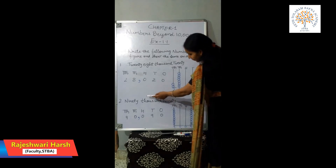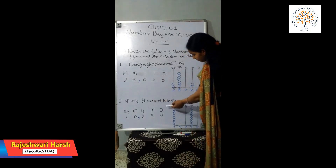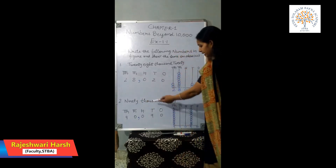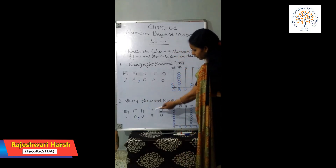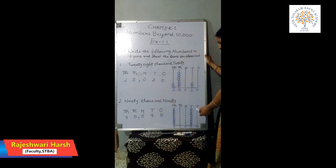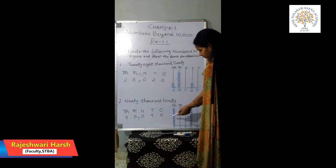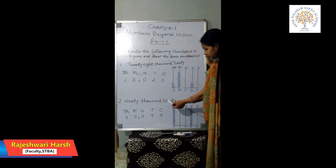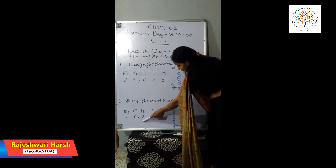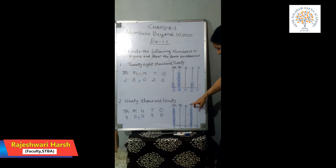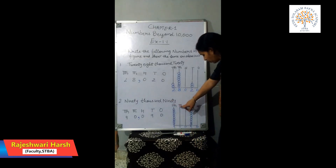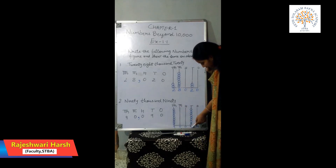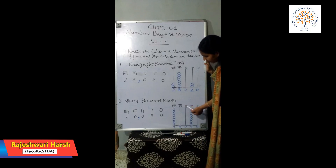Next question: 90,090. Write ones, tens, hundreds, thousands, and ten thousands. 90,000 means write 9 on the ten thousands place and 0 on the thousands place. 90 means write 9 on the tens place and 0 on the ones place. There is no digit in the hundreds place, so write 0. On the abacus, draw 9 beads on the ten thousands place and 9 beads on the tens place. No beads on hundreds, thousands, or ones.